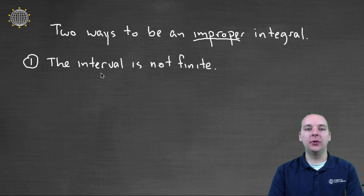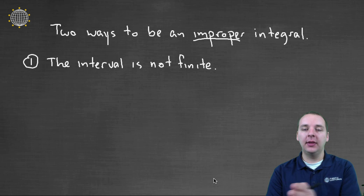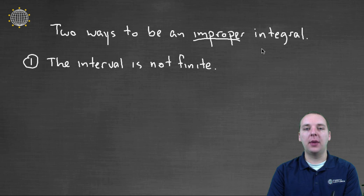Well, the first way is if the interval that you're integrating over isn't finite. We expect to have an interval like 0 to 5, or 2 to 10, or negative 1 to 3, or something like that. But if your interval, let's say, went from 1 to infinity, then technically that would not be a proper integral. It would be improper.